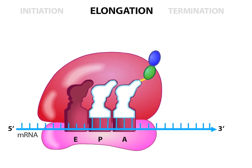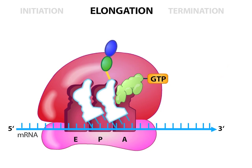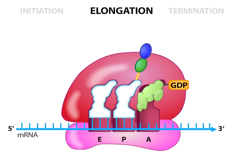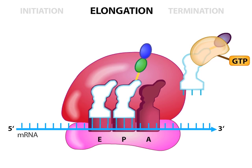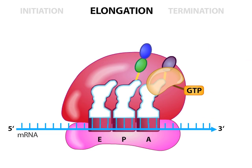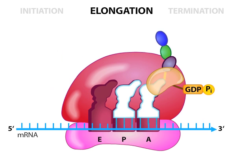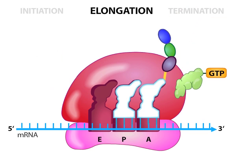The third step is called translocation. An elongation factor called EFG, associated with GTP, binds to the ribosome. The GTP is hydrolyzed, providing the energy to ratchet the 50S and 30S subunits ahead one codon. This maneuver opens up the A site and slides the uncharged tRNA into the last site, called the E, or exit, site. The next aminoacyl tRNA that enters the A site creates a conformational change in the ribosome that telegraphs through to the E site and ejects the uncharged tRNA.